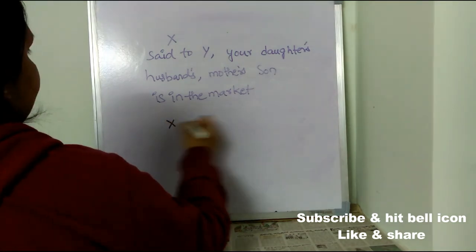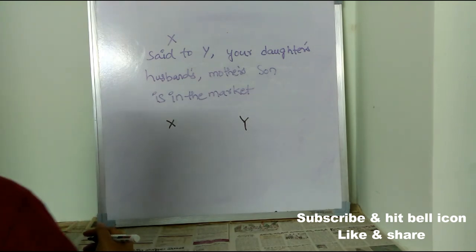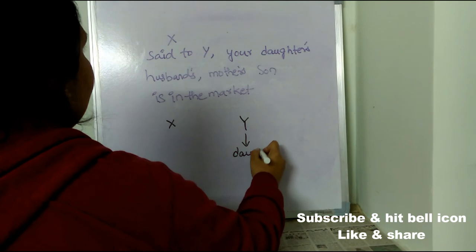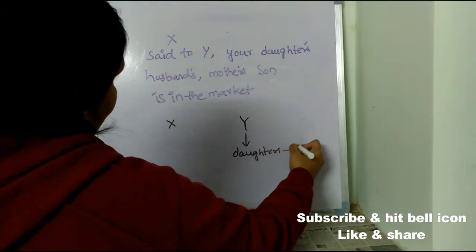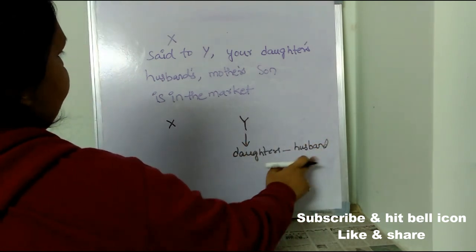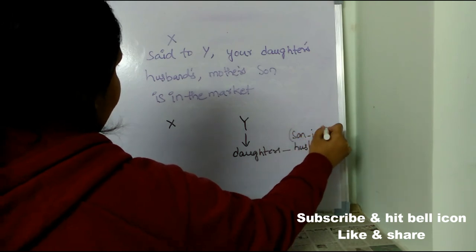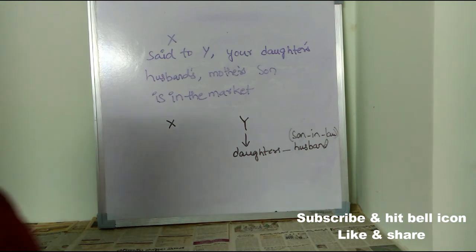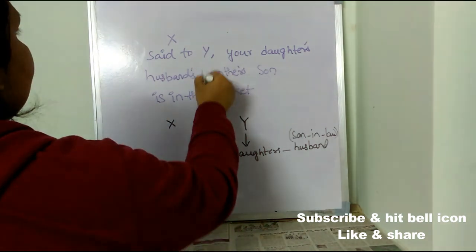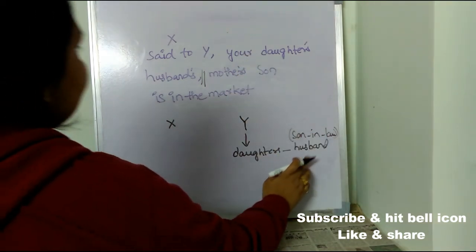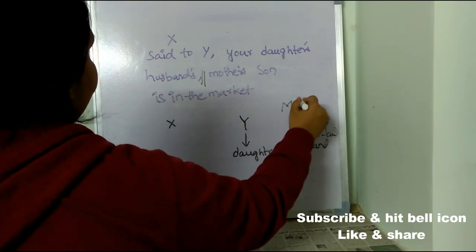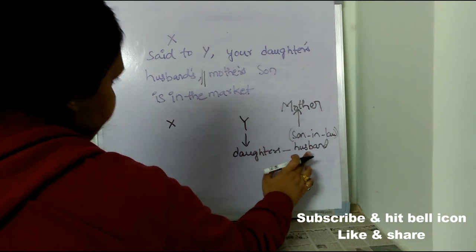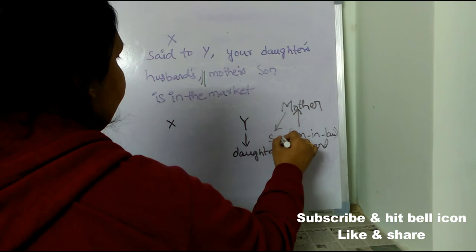Let's consider X and Y. What did X say to Y? Your daughter — your daughter's husband — your daughter's husband is your son-in-law. So if we solve it till here, we get son-in-law. Now: son-in-law's mother's son.